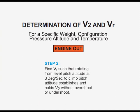With V-2 and its associated pitch attitude determined, VR will be found experimentally. At various airspeeds slightly before V-2, rotation at 3 degrees per second to the V-2 pitch attitude is accomplished. The rotation speed that establishes and holds V-2 without overshoot or undershoot becomes VR.